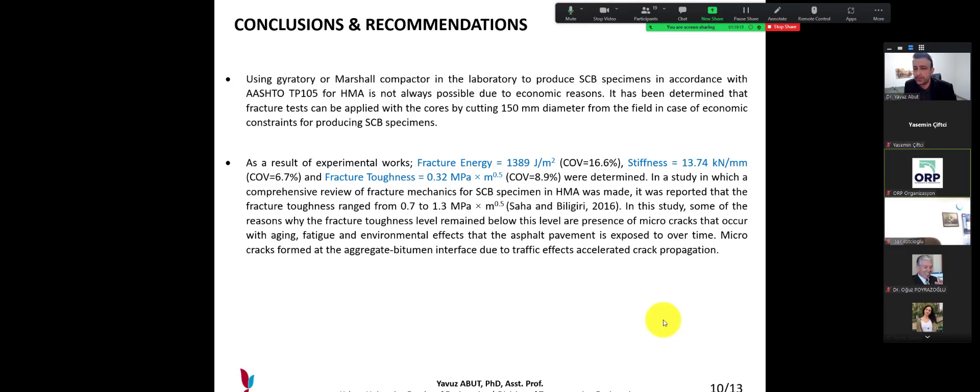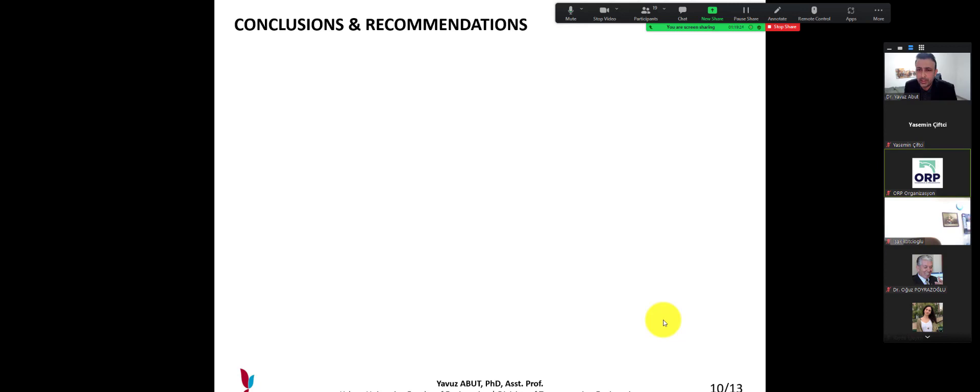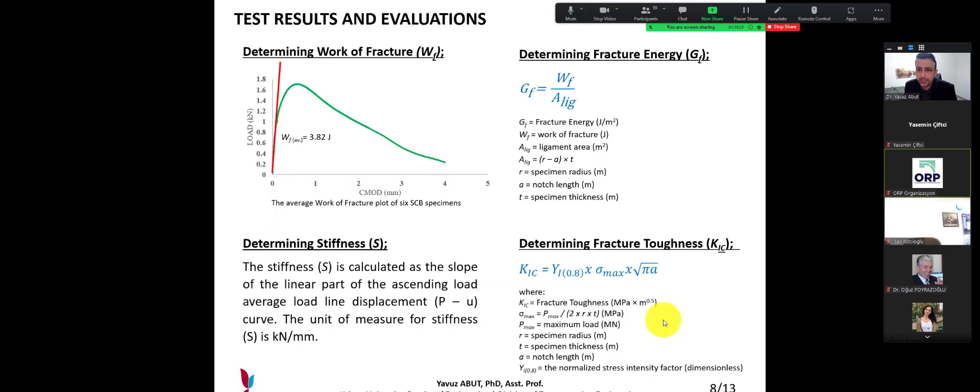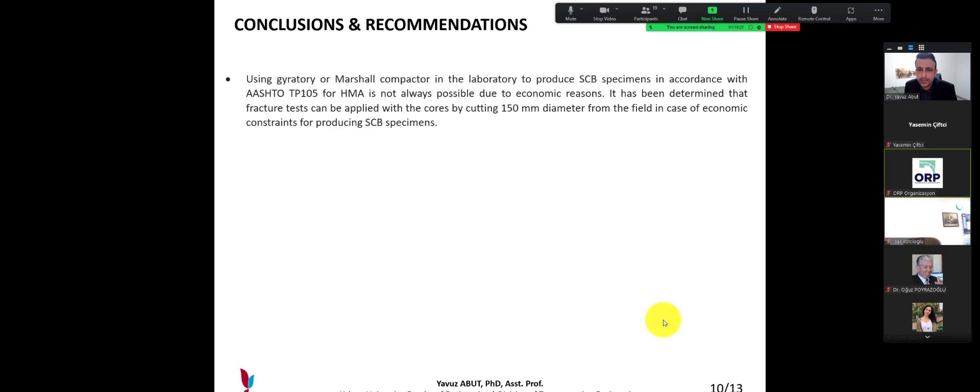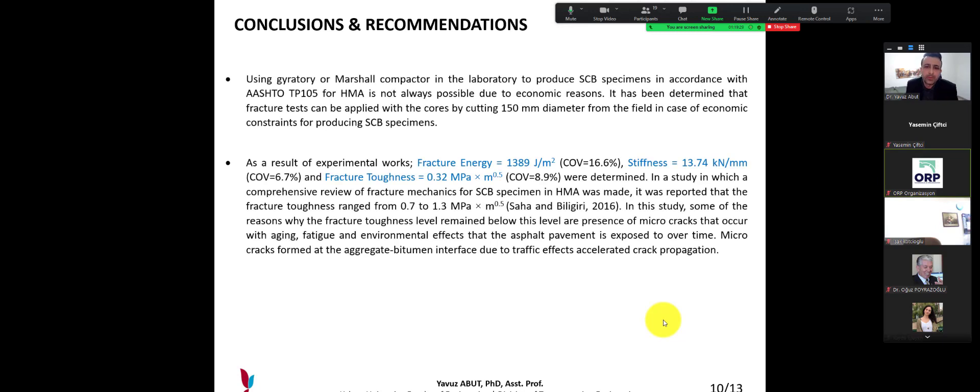As a result of experimental works on fracture energy, stiffness, fracture toughness, etc., you could see the last slide. In a study in which a comprehensive review of fracture mechanics for SCB specimen in hot mix asphalt was made, it was reported that the fracture toughness ranged from 0.7 to 1.3 megapascal square root of meter.